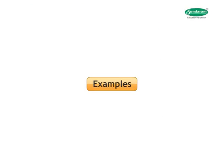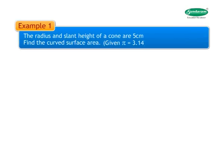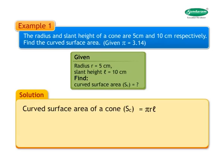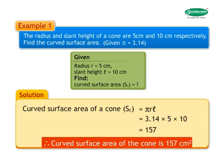Example 1: The radius and slant height of a cone are 5 cm and 10 cm respectively. Find the curved surface area (given π = 3.14). Solution: Curved surface area = π × r × l = 3.14 × 5 × 10 = 157. Therefore, the curved surface area of the cone is 157 square centimeters.